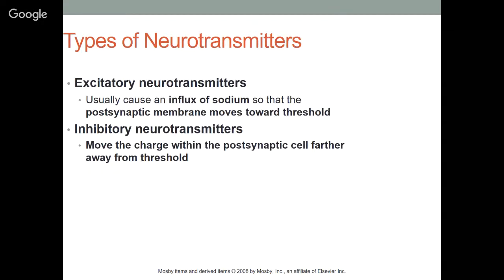The neurotransmitters diffuse across the synaptic cleft and bind to receptors on the post-synaptic membrane. There are excitatory neurotransmitters, which cause sodium influx so the post-synaptic membrane moves toward threshold and fires. There are also inhibitory neurotransmitters, which move the charge farther away from threshold. So either the neurotransmitter excites the nerve and gets it to fire, or it inhibits the nerve and keeps it from firing.